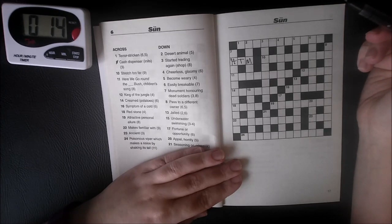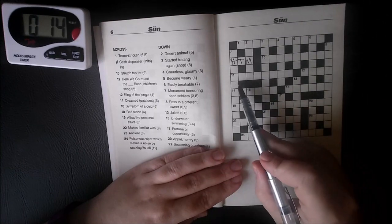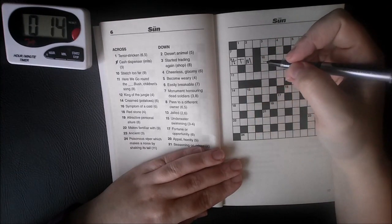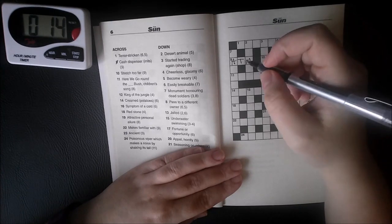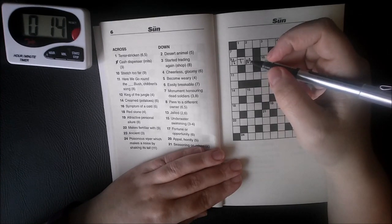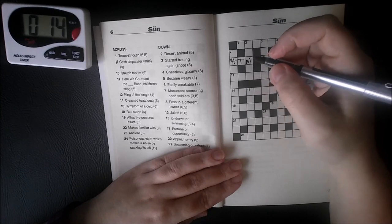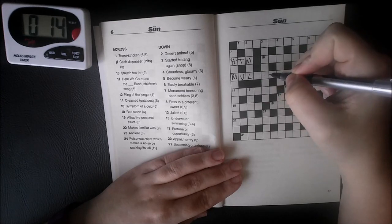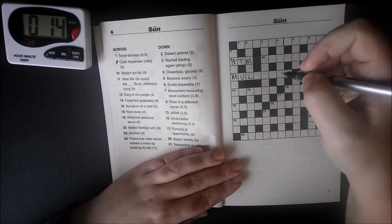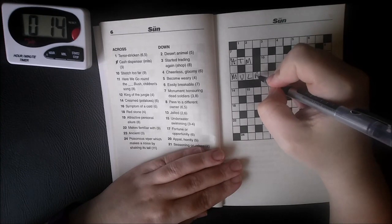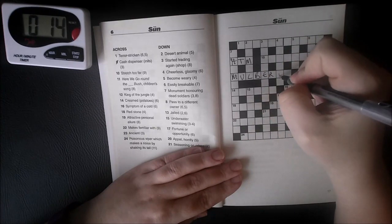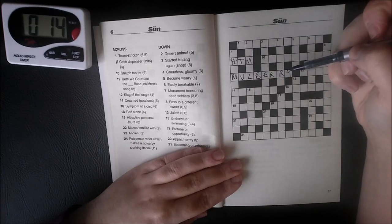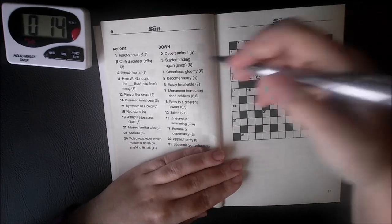Here we go around the blank bush, children's song, eight letters. Here we go around the mulberry bush, the mulberry bush, the mulberry bush. Here we go around the mulberry bush on a cold and frosty morning, is that that one? M-U-L-B-E-R-L, mulberry? Yeah. I can't make out if it had two L's or two R's. Well we will find out in a minute.